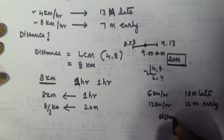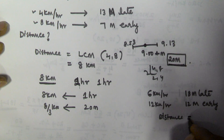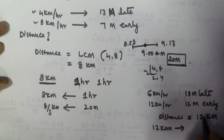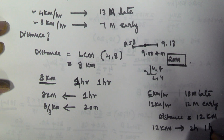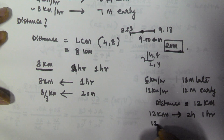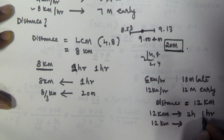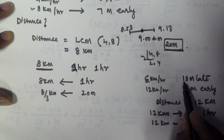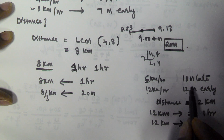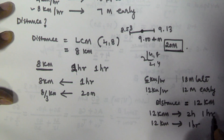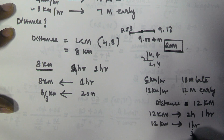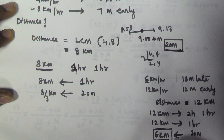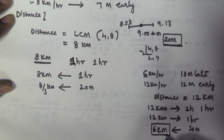Since distance is constant, I am taking the distance as the LCM of 6 and 12, which is 12 kilometers. If 12 kilometers is the distance, the first day he will take 2 hours and the second day he takes 1 hour — a difference of 1 hour. When traveling at 6 km/h he reaches 18 minutes late, and at 12 km/h he reaches 12 minutes early, so the time difference is 18 plus 12, that is 30 minutes. If 1 hour corresponds to 12 kilometers, then 30 minutes corresponds to 6 kilometers. So the distance between his home and office is 6 kilometers.